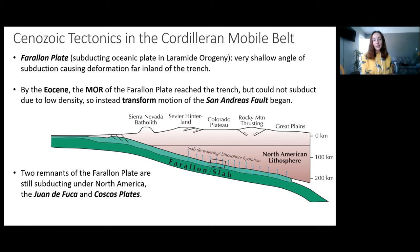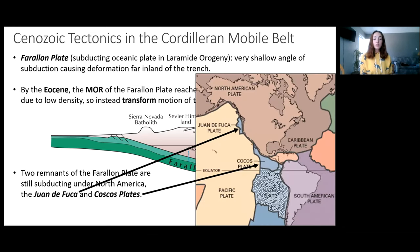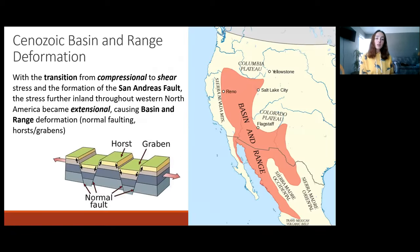Transform motion began causing the San Andreas Fault instead of continuing compressional subduction. Currently today, the remnants of the Farallon Plate that hadn't subducted yet, called the Juan de Fuca Plate and the Cascades Plate, are still subducting under North America as seen in this map. However, the shift in stress regime in the Eocene did cause a lot more that we'll discuss before moving on to more recent events.